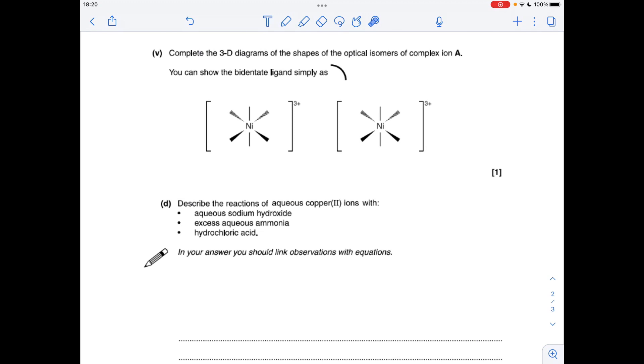And the last part of C, you've got to complete these 3D diagrams for the optical isomers, and they've been really nice by just saying you can use this to represent the bidentate ligand. So I'll start off, and I'll put my first bidentate ligand there, put the next one there, and I'll put the third one there. So because I've put them like that, I've got to mirror that in the right-hand structure. So this here would be there. So my next one goes there, and my third one goes there.